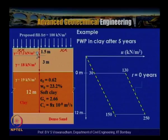Another example: A soil stratum with a 12 m thick clay layer sandwiched between sand layers at top and bottom (double open layer — two-way drainage). The water table is 1.5 m below the ground surface. A proposed fill applies Δσ = 100 kPa. The coefficient of consolidation cv = 18×10⁻⁸ m²/s. We wish to determine pore water pressure in the clay after 5 years.